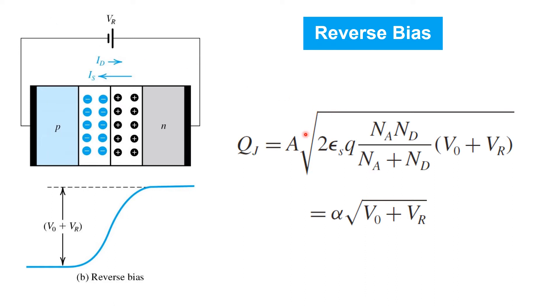The other constants in this charge equation here include the cross-sectional area of the P-N junction. Not surprisingly, junctions with larger cross-sectional area will store more charge. Dielectric constant of silicon, fundamental electronic charge, and the dopant concentrations on each side of the P-N junction. All these constants are wrapped up together in the single constant alpha here. So in this formulation, we've emphasized the square root relationship between reverse bias voltage and charge stored on the junction, Q-J.